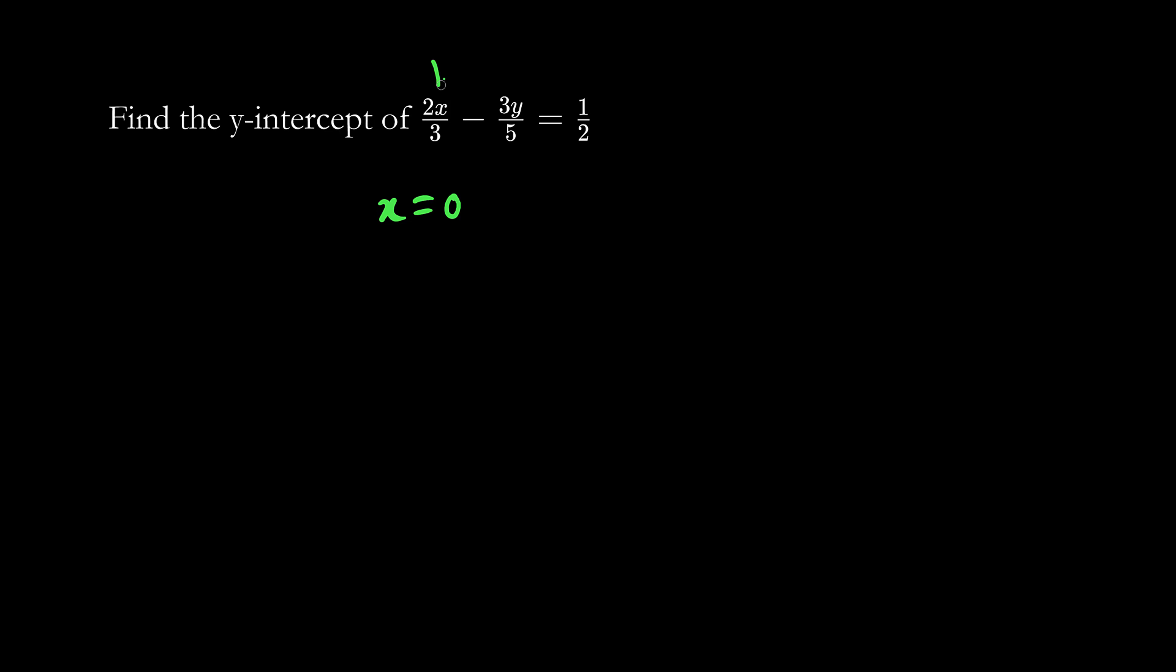So we substitute 0 here. 2 times 0 becomes 0. 0 divided by 3 disappears, so this entire term disappears.